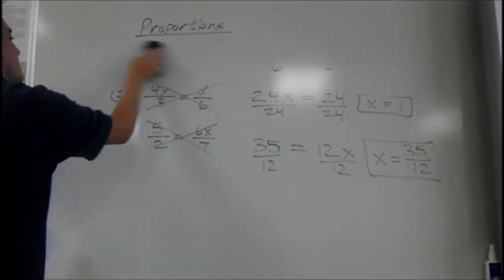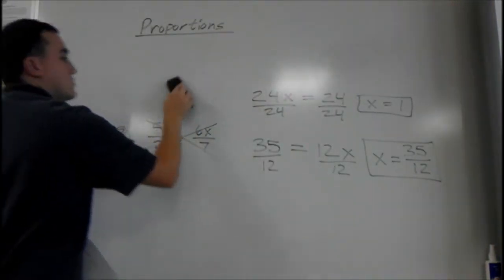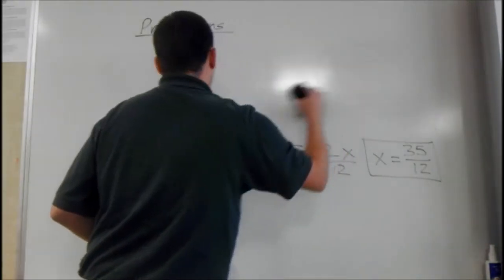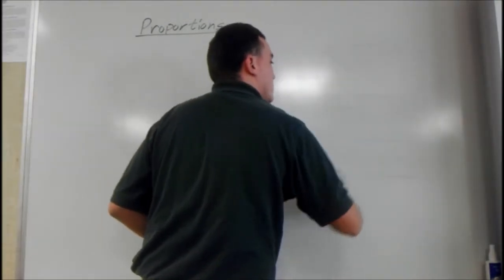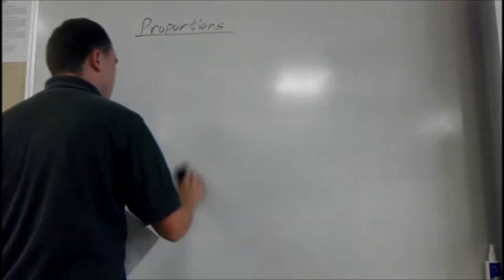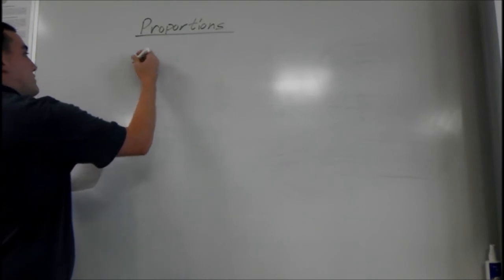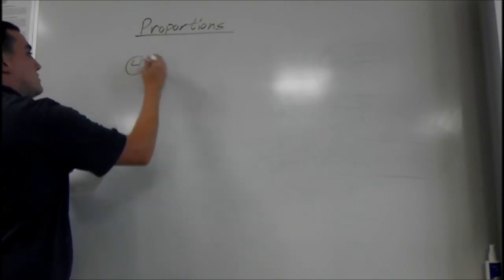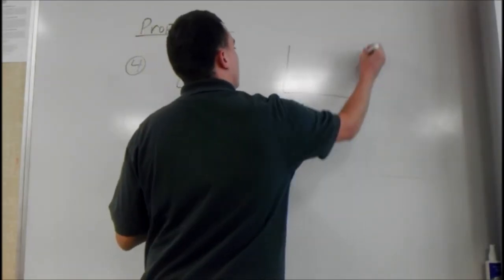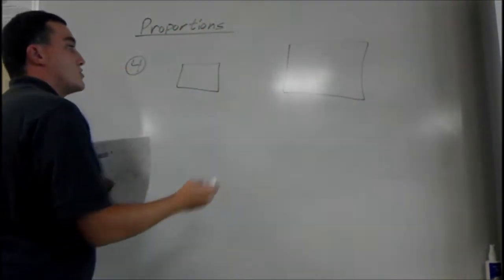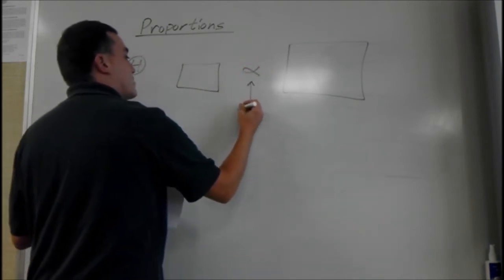So proportions are mainly used when dealing with shapes that are similar. If we have two similar shapes, they're proportional. And we can make these fractions just like this. Here's our first one.